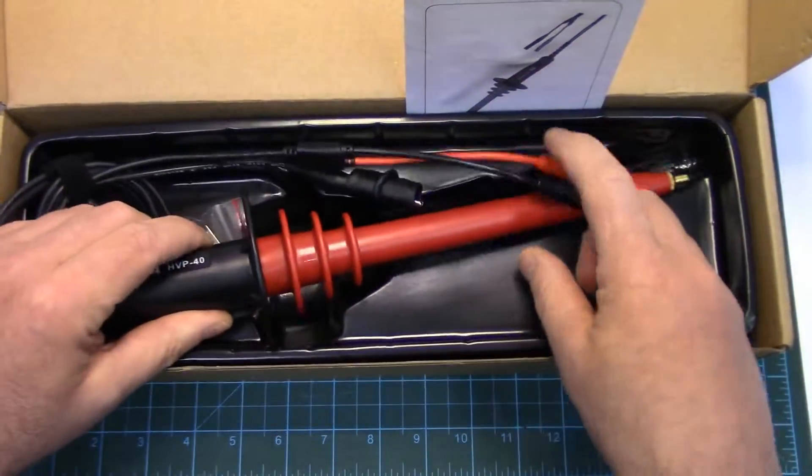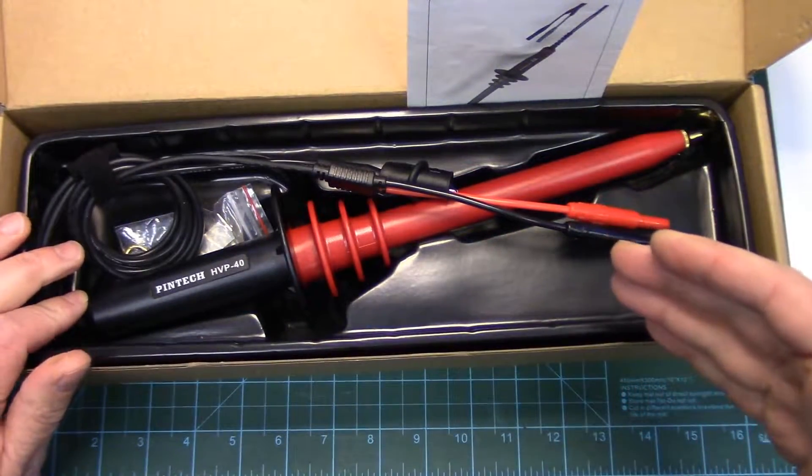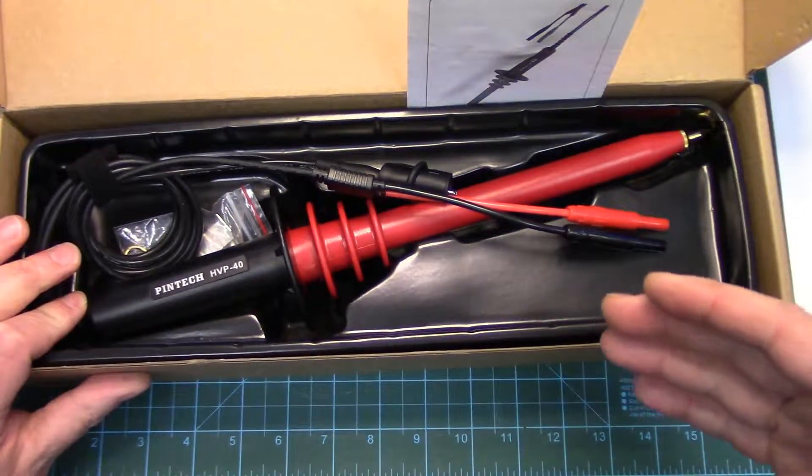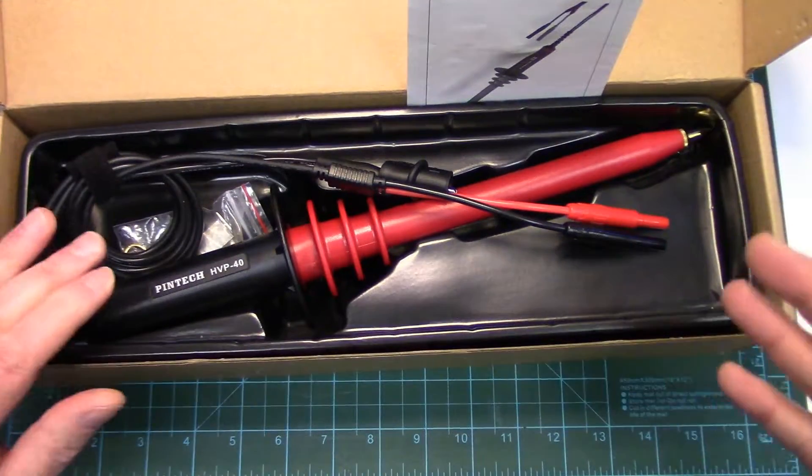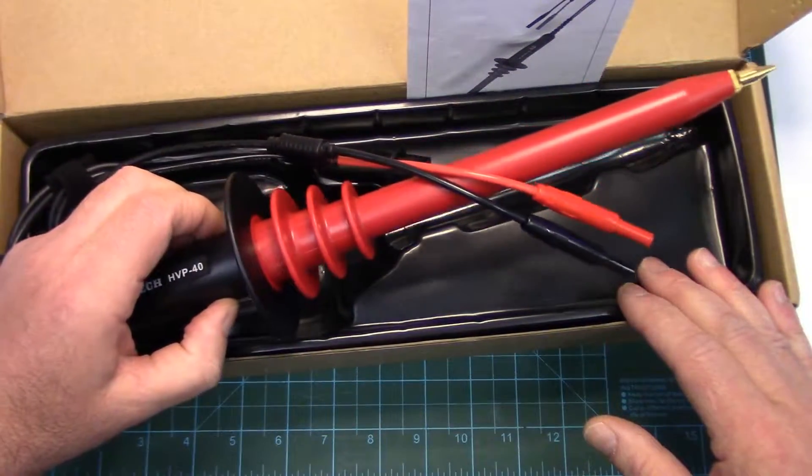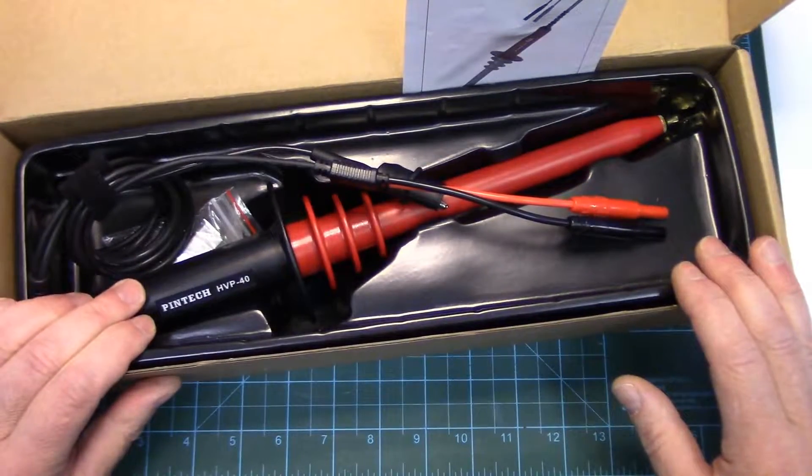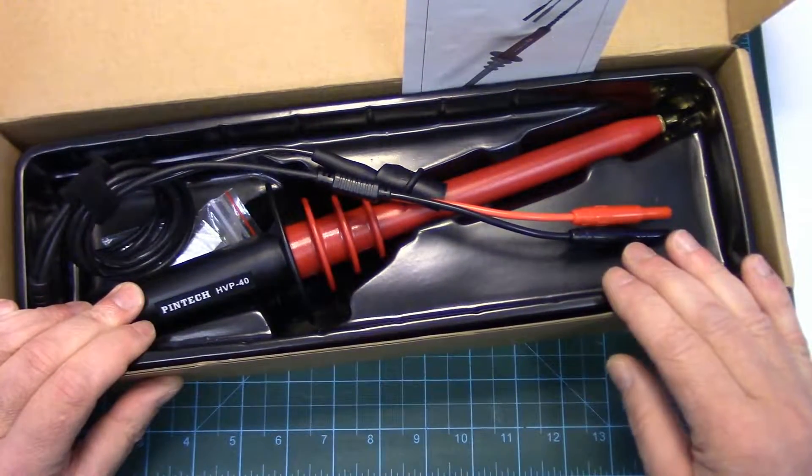These things also double as a high voltage dissipator. So, if you're discharging high voltage capacitance from a CRT or anything that's holding high voltage, when these are grounded, you touch the tip and you can slowly dissipate that high voltage charge through the built-in resistance of these things.